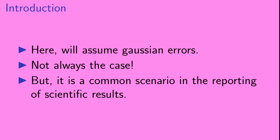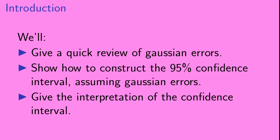In this video, we're going to assume that our measurement errors are Gaussian distributed. This doesn't cover all scenarios, but it is common in the reporting of scientific results. We'll first give a quick review of Gaussian errors, then show how to construct a 95% confidence interval for the case of Gaussian errors, and lastly give the interpretation of this confidence interval.